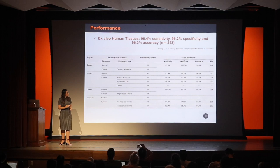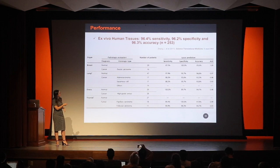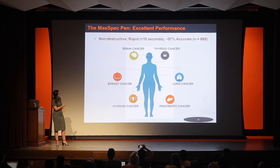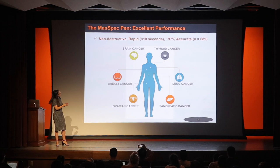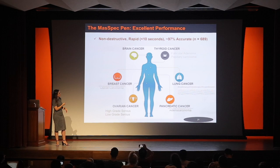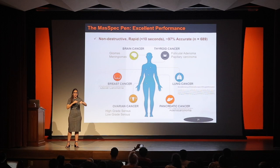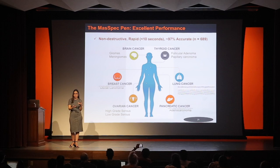In our first paper published in 2017, we reported about 96.3% accuracy with about 250 tissues across breast, lung, ovary, and thyroid. Since then we've expanded — we've passed 700 human tissues analyzed in my lab, from collaborations with MD Anderson, College of Medicine, and Dell. We've looked at brain, thyroid, lung, pancreas, ovarian, and breast cancer. Analysis is non-destructive for all these organs, really rapid at 10 seconds, and we have about 97% accuracy. Not only cancer versus normal — we can also subtype cancer, because different cancer subtypes have different metabolism. If we detect these metabolic changes, we can tell what type of cancer and how aggressive it is, which is really important for determining treatment strategy.